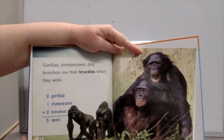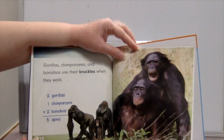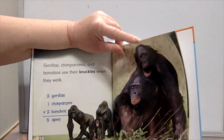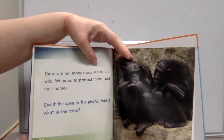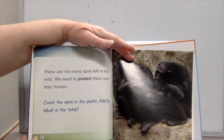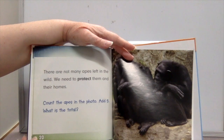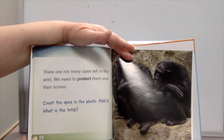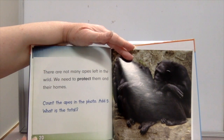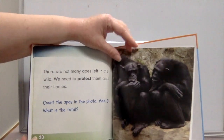Two gorillas, one chimpanzee, plus two bonobos equals five apes. There are not many apes left in the wild — we need to protect them and their homes. Count the apes in the photo and add five. What is the total?